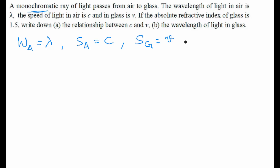The absolute refractive index of glass is 1.5. He gave us the absolute refractive index, which is the refractive index of glass with respect to air or vacuum — both are the same — equal to 1.5. What we need to find out is the relationship between c and v, and also the wavelength of light in glass.